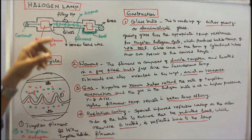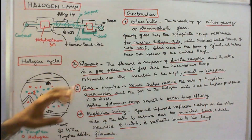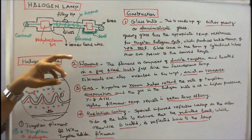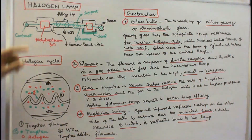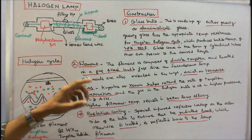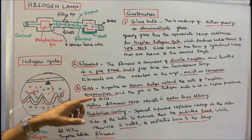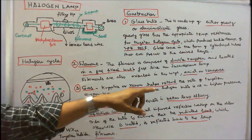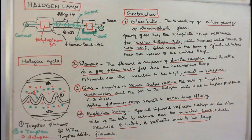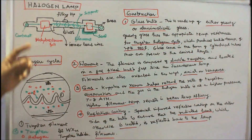Filaments are oriented in two ways: axial or transverse. Component three is the gas. Krypton or xenon is used, which helps retard the rate of tungsten evaporation. The gas in the halogen bulb is at a higher pressure of 7 to 8 atm. Higher filament temperature results in better lamp efficacy.